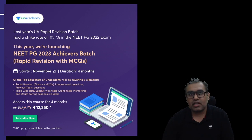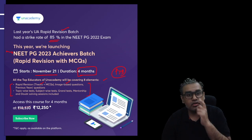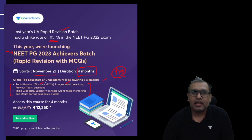We're also launching a very interesting new course, mainly for the NEET PG 2023 Achievers Batch. It's going to start on November 21st, duration of four months. Last year's rapid revision batch had a strike rate of around 85%, a pretty good number. All the top educators of the Academy will be covering eight elements including rapid revision theory plus MCQs, image-based questions, very important previous year questions, topic-wise tests, subject-wise tests, grand mentorship, and doubts, leaving no stone unturned.